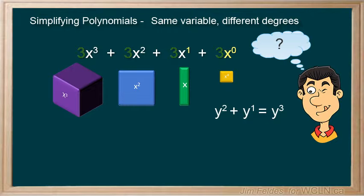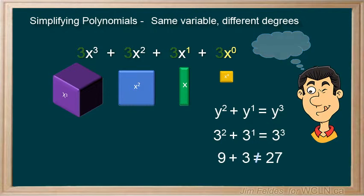Check! Substitute a real value like 3. Does 3² plus 3¹ equal 3³? No, 9 plus 3 does not equal 27. Then you remember the rule for combining exponents only applies with multiplication. Not for the addition we find in polynomials.